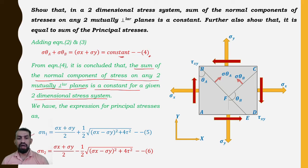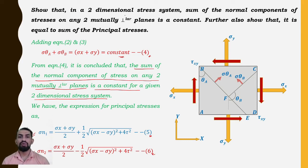We also have the expressions for principal stresses: σn1 = (σx + σy)/2 + (1/2)√[(σx − σy)² + 4τ²] as equation 5, and σn2 = (σx + σy)/2 − (1/2)√[(σx − σy)² + 4τ²] as equation 6.